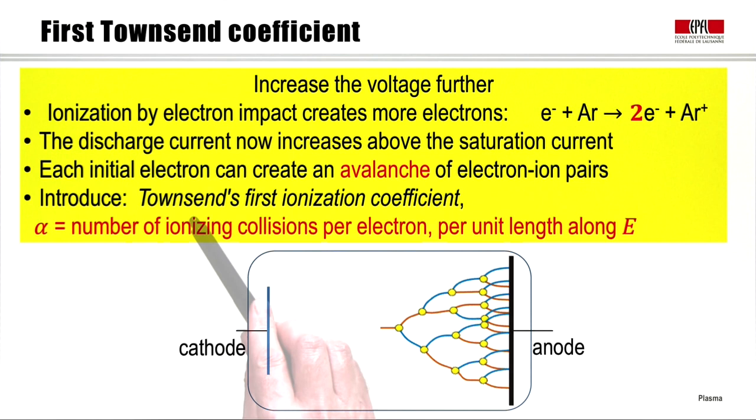This was considered by Townsend in the year 1900. Townsend introduced something called the first ionization coefficient, which he defined as alpha, the number of ionizing collisions per electron, per unit length, along the electric field.